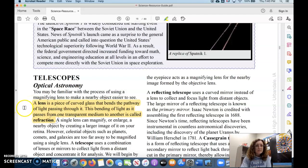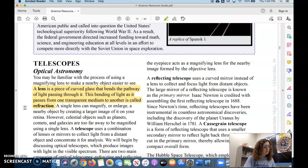So now we're going to talk about optical astronomy and telescopes. A lens, you've probably seen this. This is a piece of curved glass. It bends the pathway of light passing through it. That's called refraction.